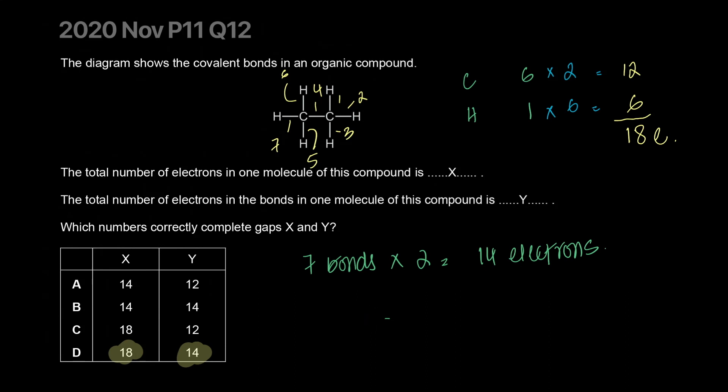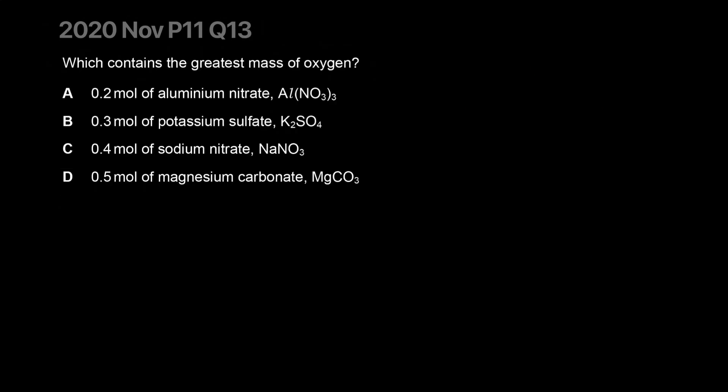I'm going to just fix that. It is indeed D. Which contains the greatest mass of oxygen? Essentially we have to find out greatest moles of oxygen and we can figure it out. Let's figure it out, you have 0.2 moles of aluminum nitrate, you have 0.3 moles of potassium sulfate, 0.4 of whatever and 0.5 of whatever.